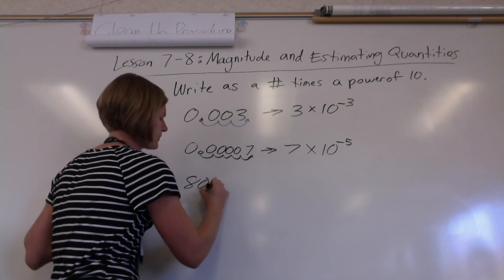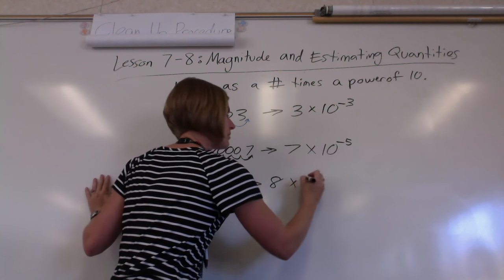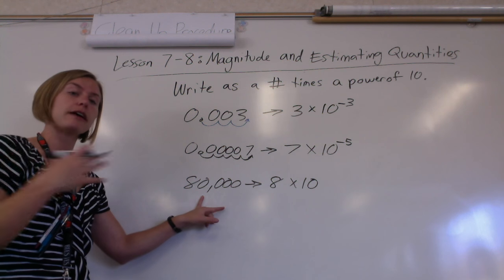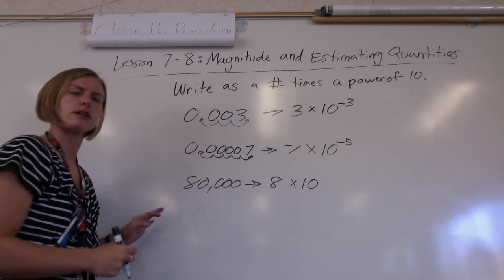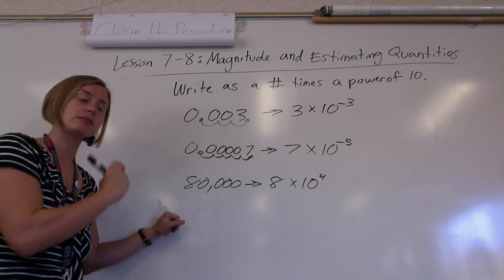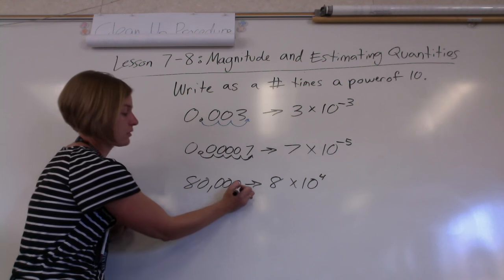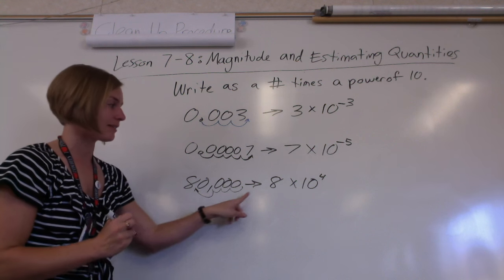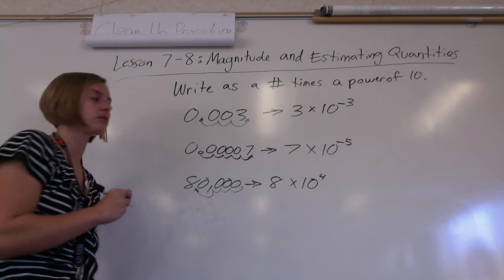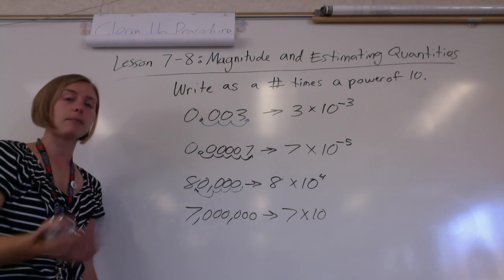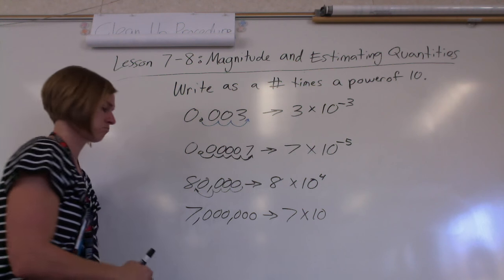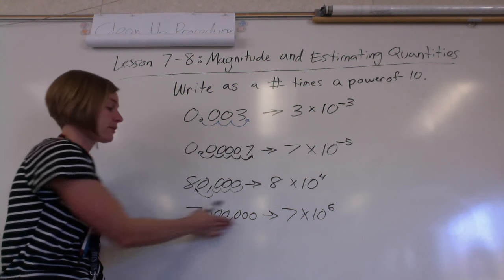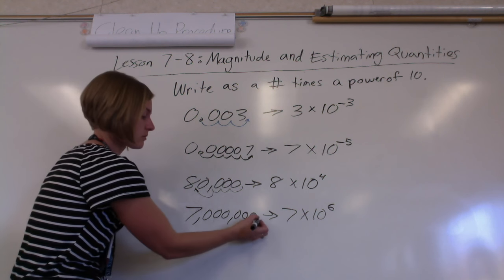Let's try positive numbers. What if I had 80,000? Keep that eight, and it's times some power of 10. You can think there are four zeros so we put a power of 4. Or all whole numbers have a decimal at the end even if we don't write it — how many times do you have to move it to make 80,000 just a regular 8? That's four times. Same idea for seven million: keep that seven, there are six zeros so it's 10 to the 6th. Remember that only works with positive exponents for numbers greater than zero.